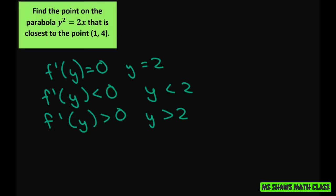So for the first derivative test for absolute extreme values, the absolute minimum occurs when y equals 2. So the corresponding of x is x equals y squared divided by 2. So plug in your 2 and you're going to get, x equals 2 squared divided by 2, which is 2. So the closest point to 1 comma 4 is 2 comma 2.